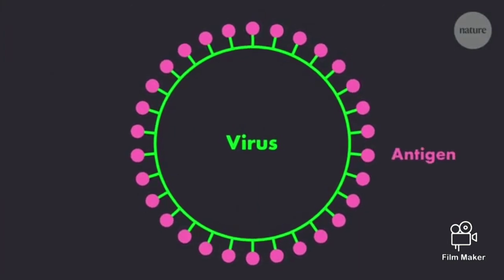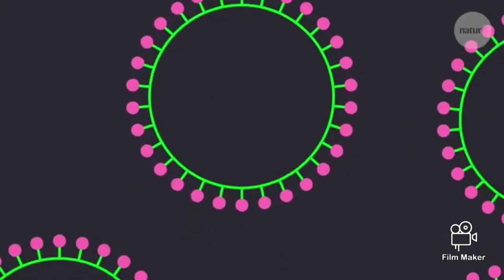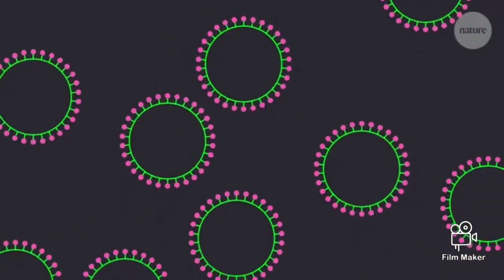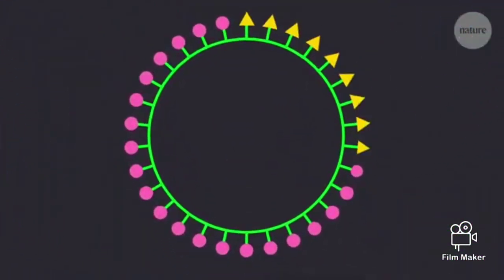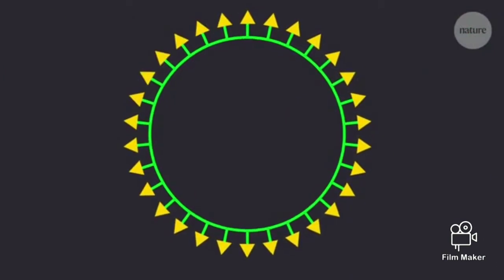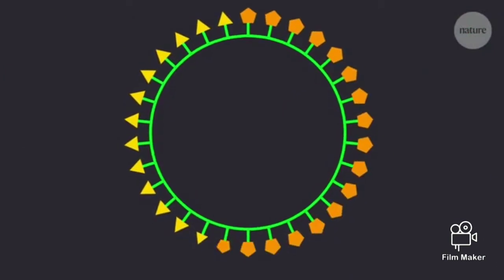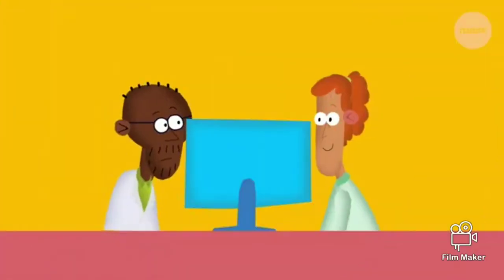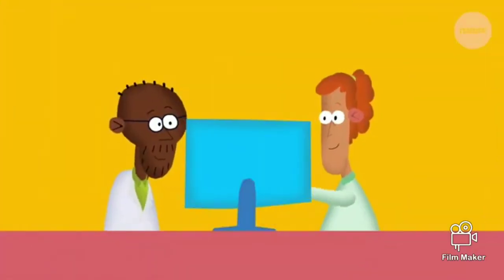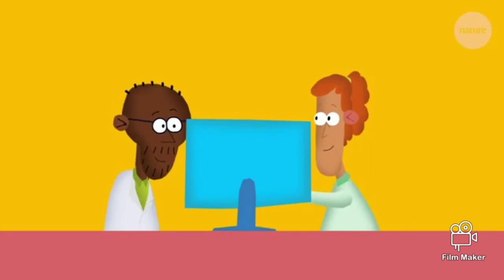For some pathogens, these antigens always stay the same. Other pathogens, like the virus that causes flu, can change or mutate their antigens, and so these must be reanalyzed every year. Once you have identified the pathogen or antigens, you need to decide how you're going to use them to build a vaccine.